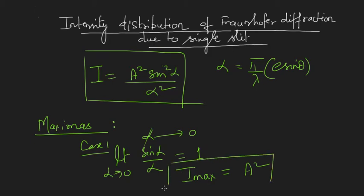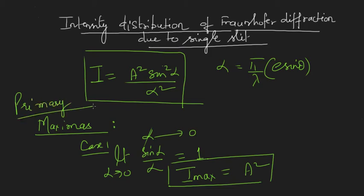So I get my maxima at only one point: α→0. This gives the maximum intensity and is referred to as the primary maxima. Why we give it the name primary maxima, we will see shortly.